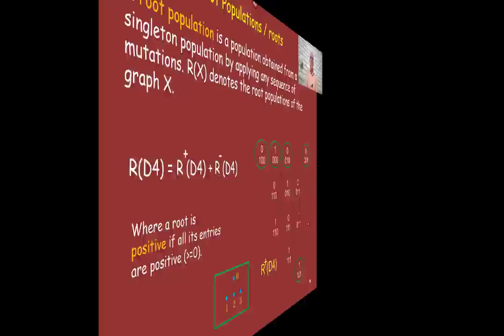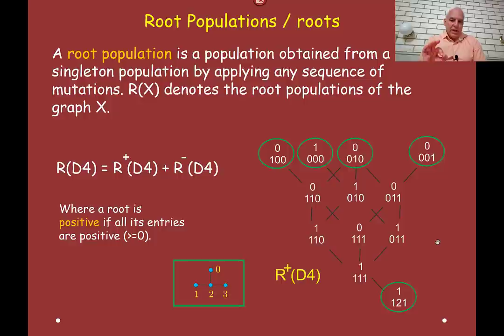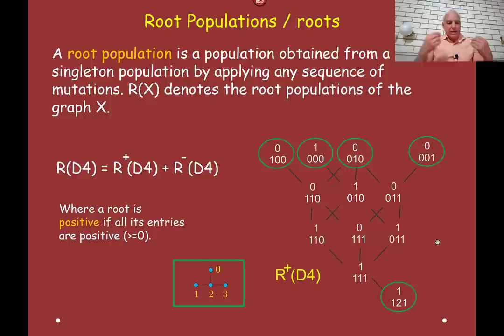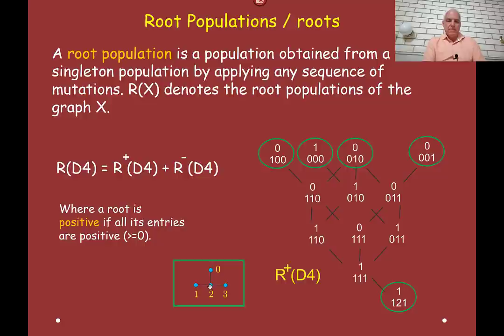Now let's introduce the idea of a root population, or just the roots. A root population is a population obtained from a singleton population — everywhere zeros except for a single 1 — by applying any sequence of mutations. For an arbitrary simple connected graph X, R(X) denotes the root populations of the graph: those populations obtainable by starting with a singleton and performing any sequence of mutations.